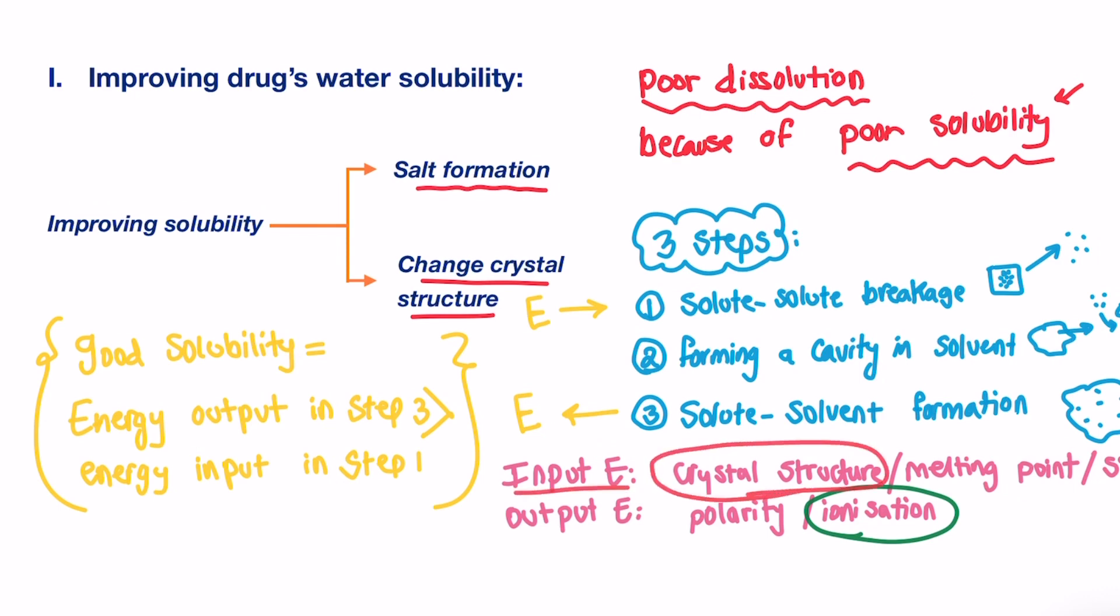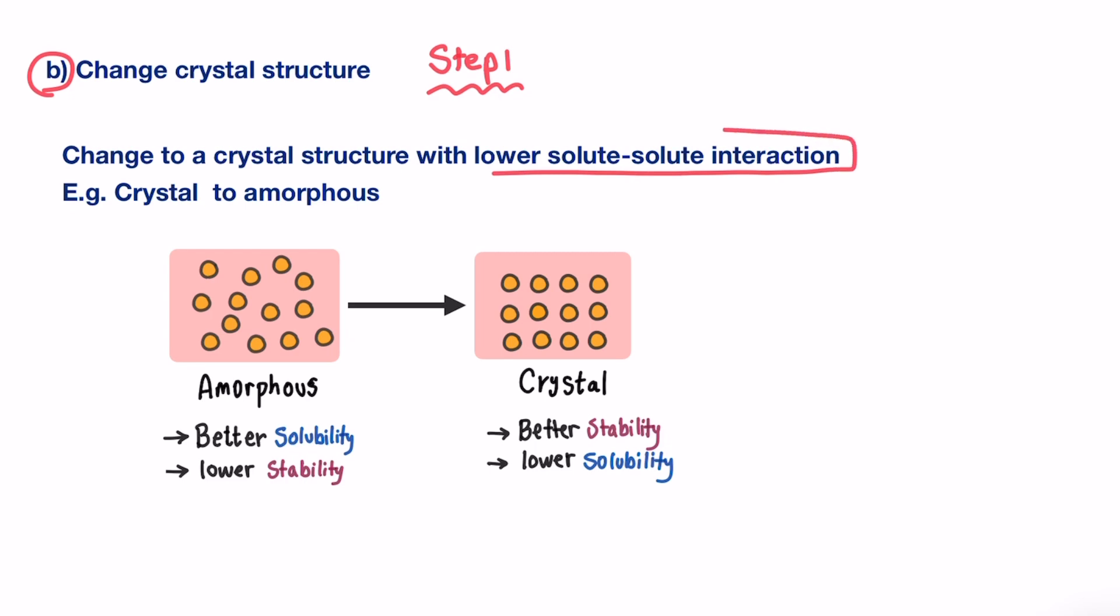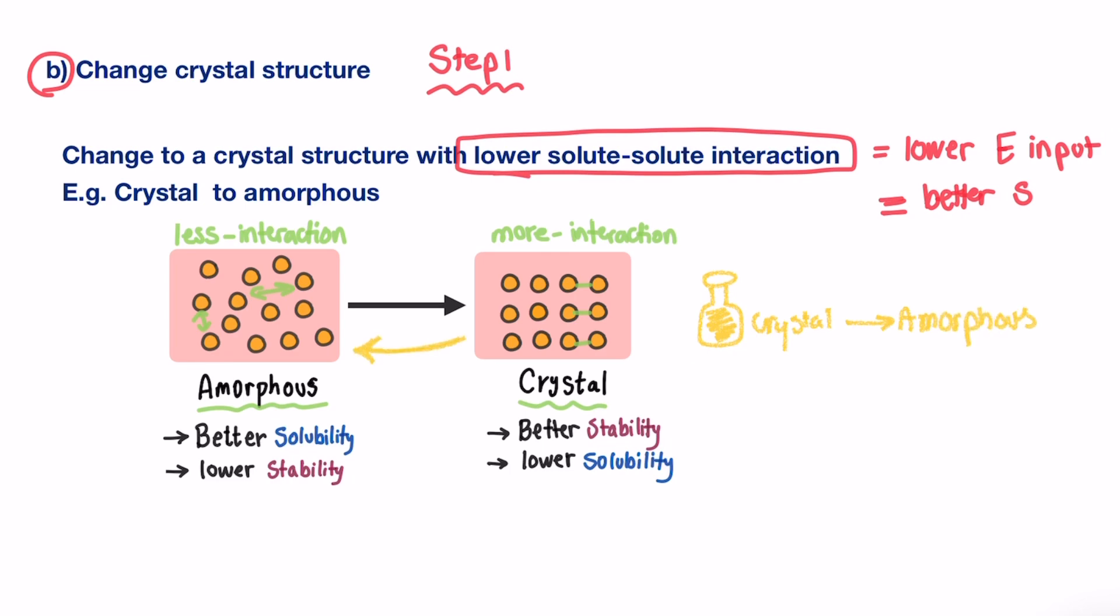Amorphous is less packed. Therefore, the drug particles have less interactions compared to crystal structure, where drug particles are highly packed and close to each other. So let's say a drug X, which is a poorly water-soluble one, is presented in a crystal structure. If we change it from crystal to amorphous, we will improve its solubility, because we made it less tight, which means lower solute-solute interaction. And this leads to less energy requirement in order to break this interaction. Therefore, energy input in step one is reduced.